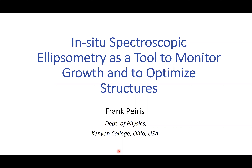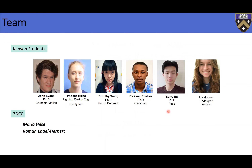I'm Frank Pierce and I teach at Kenyon College in the physics department. Let me show you the students who are working with me. Kenyon College is an undergraduate institute, so no graduate students — all undergraduates. Samples are provided by 2DCC. Five students have already graduated, and there's Liz Hauser who's working with me currently. The students who have graduated have really benefited from working with these samples from the 2DCC, and most of them have pursued condensed matter physics in graduate school.